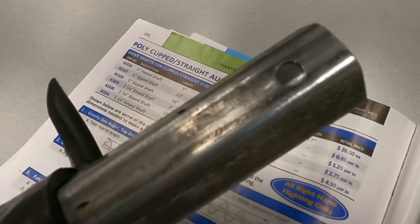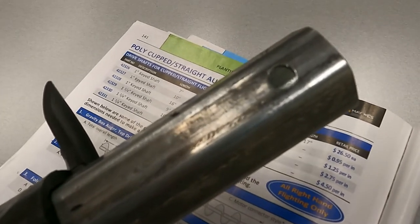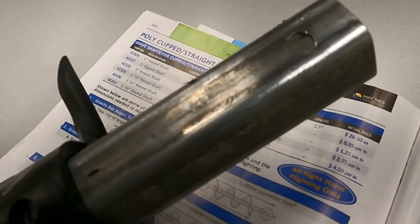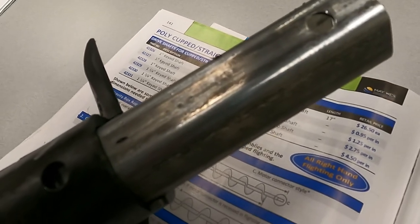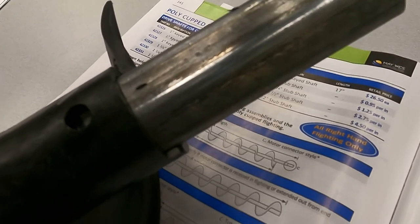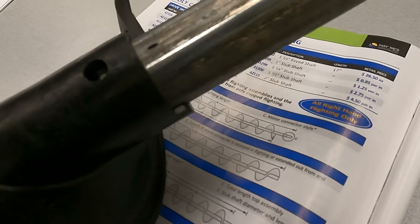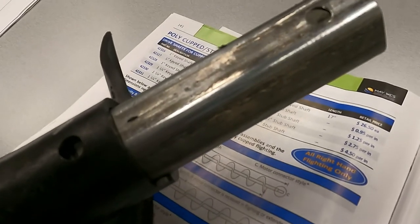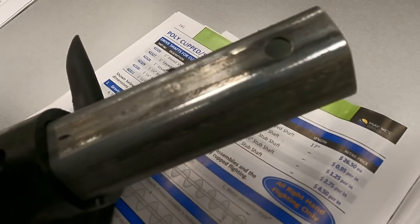All five and six inch flighting is standard with one inch shaft. For seven and nine inch flighting, you can order a one inch, inch and a quarter, inch and a half, or two inch drive shaft.